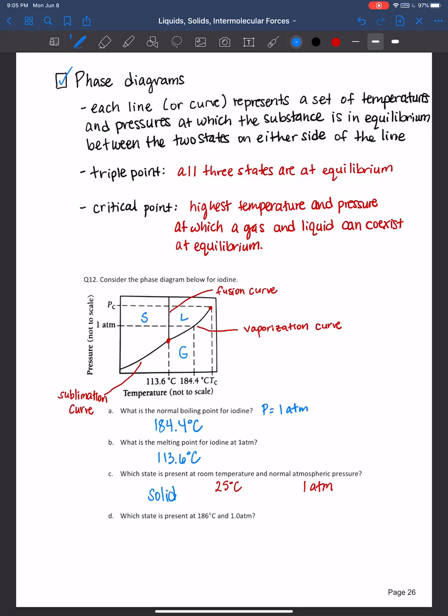Now the last question is asking us, which state is present at 186 degrees Celsius and one atmosphere? So one atmosphere, and this is about 186. Looks like it would be a gas. Very good.